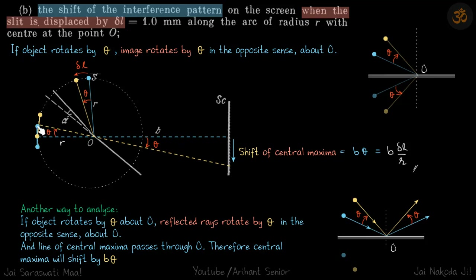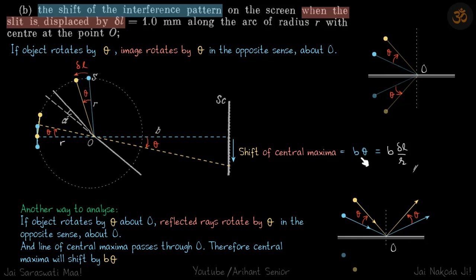To better visualize this: initially the center line between the two images was here, and because both images have shifted by angle theta, the center line will also be shifted by that same angle theta. Initially the central maxima was at the center — these were the two images — and now because the images have shifted, the central maxima will also have shifted. So this shift of the central maxima is given by B·theta, and theta equals delta L over R. Therefore, the shift of the central maxima is B·delta L / R. This is our answer.